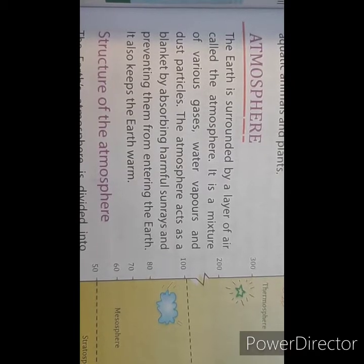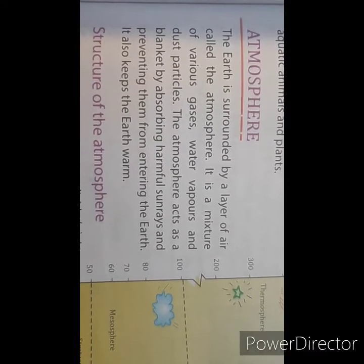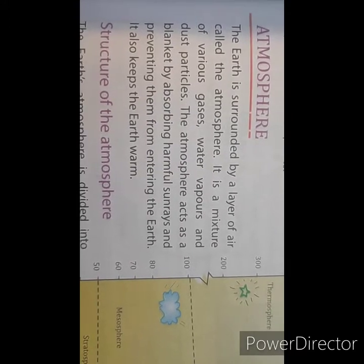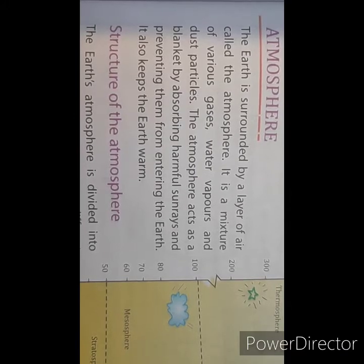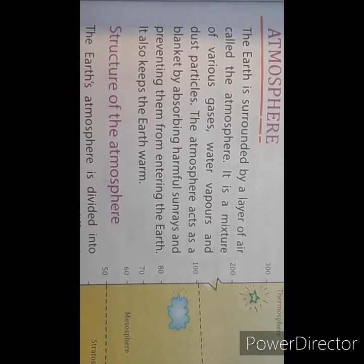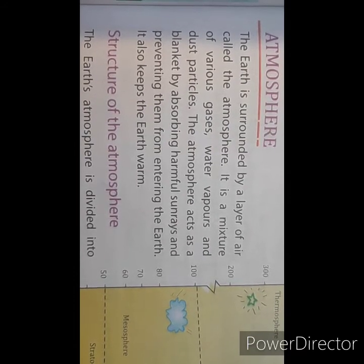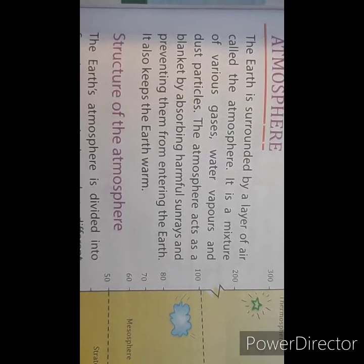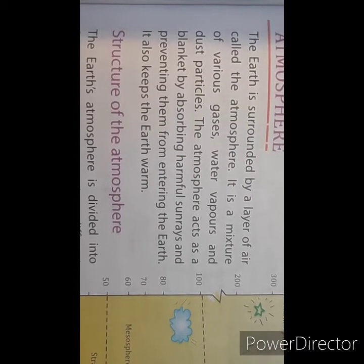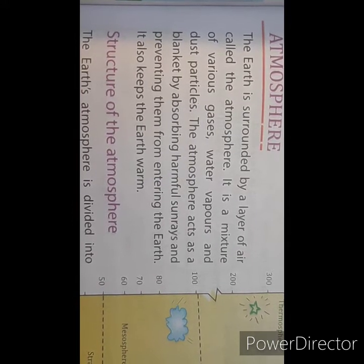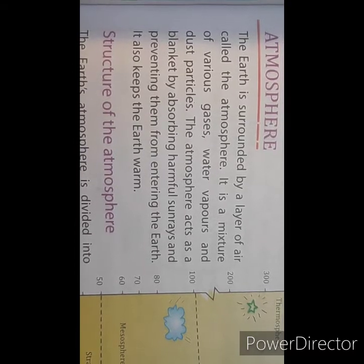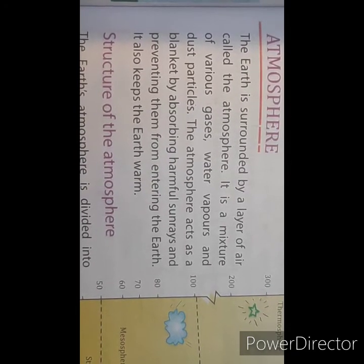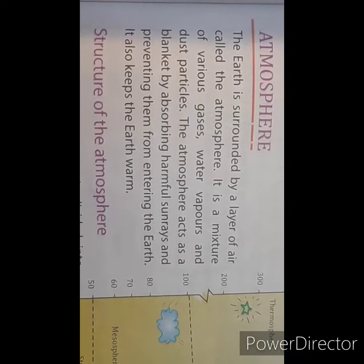Now, atmosphere. The earth is surrounded by a layer of air called the atmosphere. Atmo means air. It is a mixture of various gases, water vapors and dust particles. The atmosphere acts as a blanket by absorbing harmful sun rays and preventing them from entering the earth. It also keeps the earth warm.